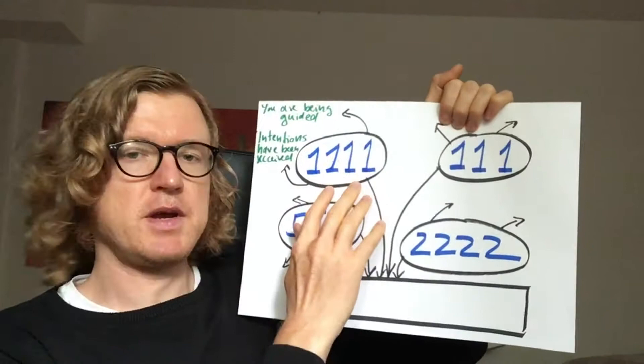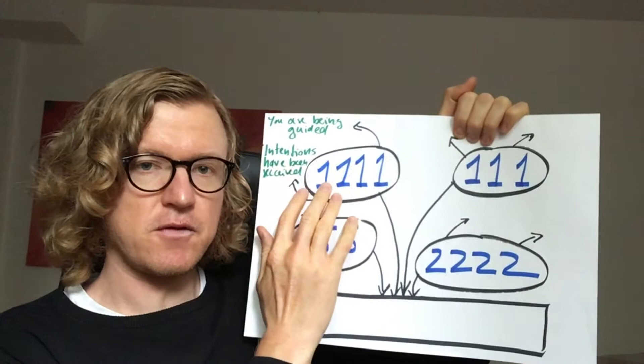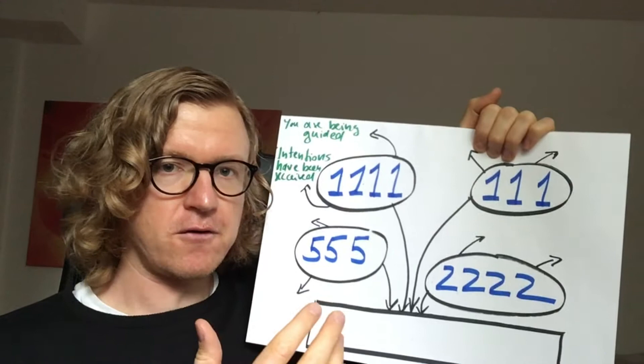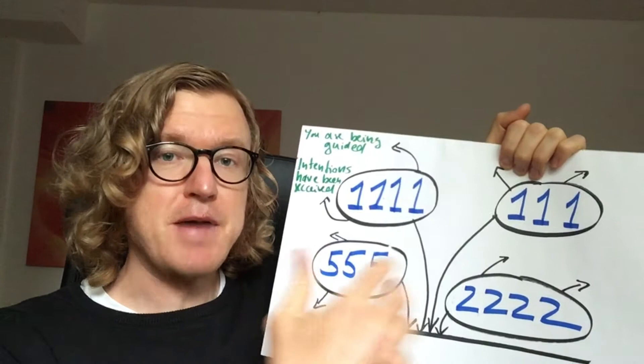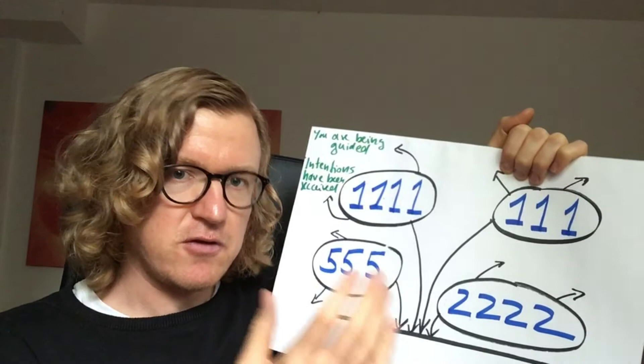The second core meaning of seeing 1111 is that your intentions have been received. So that's a confirmation for your intentions, the thoughts, the ideas that you have sent out to manifest, to get, to see appear in your reality—that this message, these intentions have been heard.